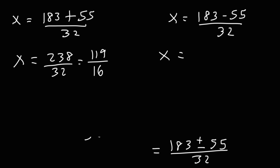For the next one, 183 minus 55 is 128, and 128 divided by 32 is 4.